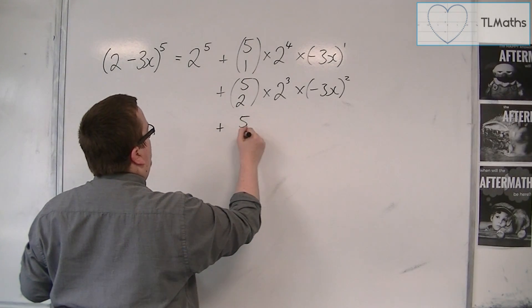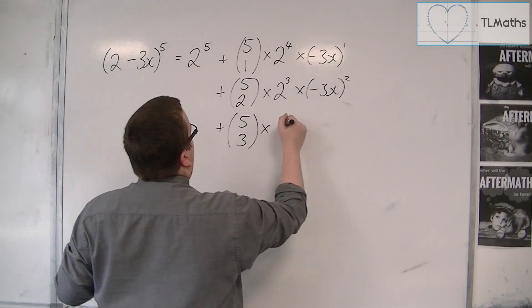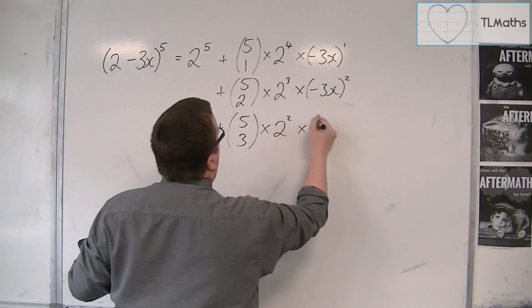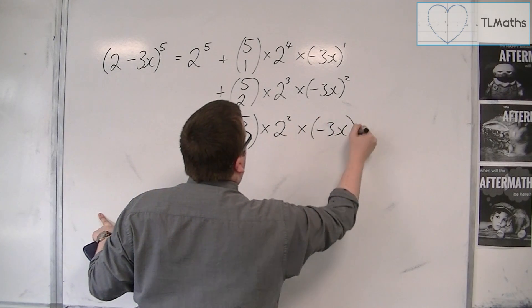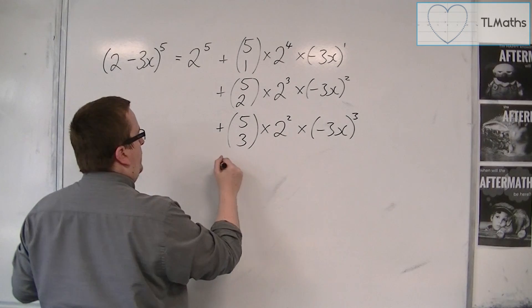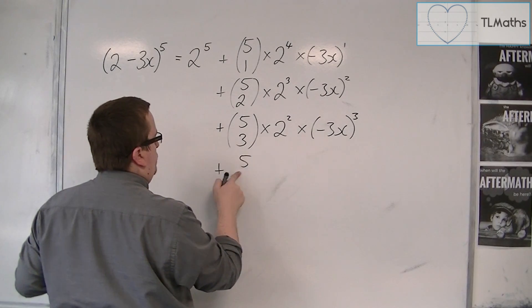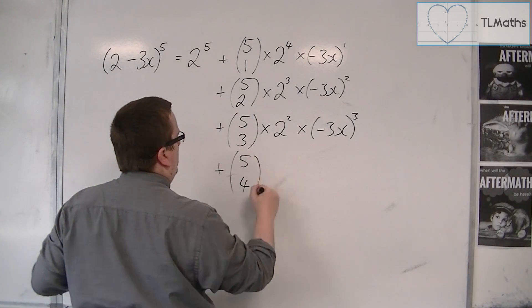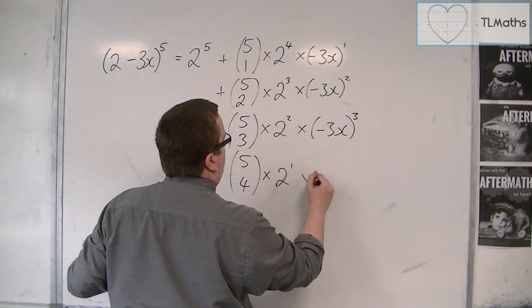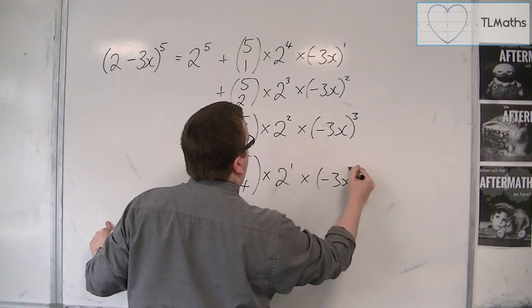Plus the next term, so 5 choose 3, times 2 squared, times minus 3x cubed, plus 5 choose 4, times 2 to the 1, times minus 3x to the 4.